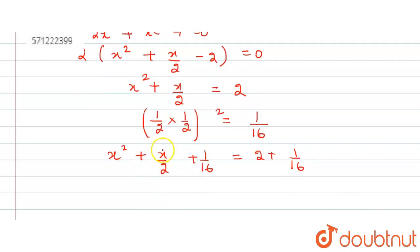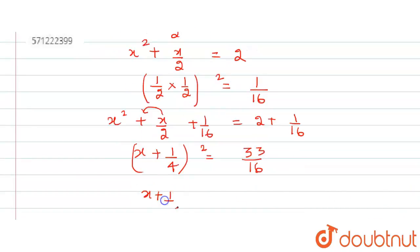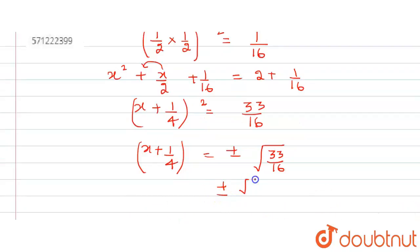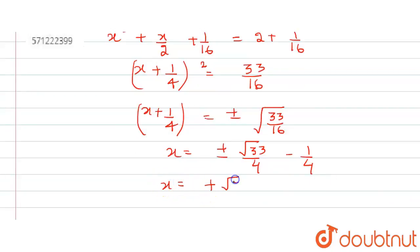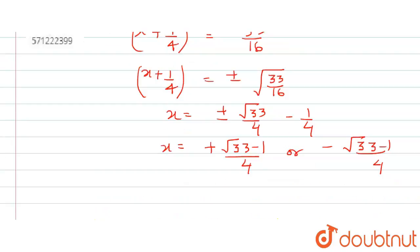On the left hand side, since x has a positive sign, we complete the whole square as (x plus 1/4)². Taking the LCM on the right hand side gives 33/16. Taking the square root: x plus 1/4 equals plus or minus √33/4. So the two roots are x = (√33 minus 1)/4 or x = (minus √33 minus 1)/4. These are the two roots of the given quadratic equation.